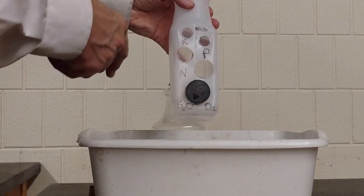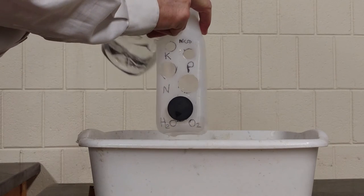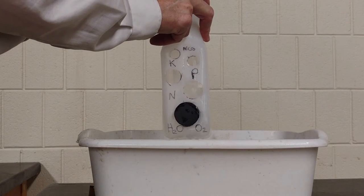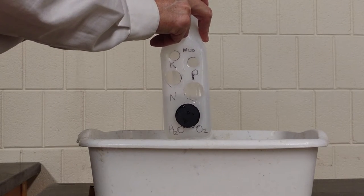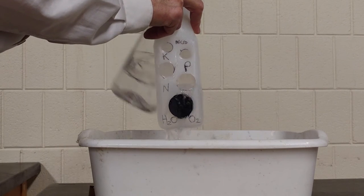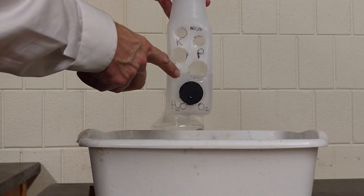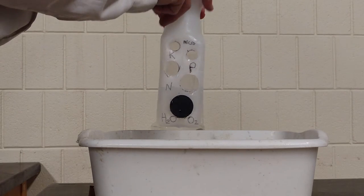Once we meet the need of a plant for oxygen and water, we increase the potential of the plant for growth until we reach the next most limiting factor. And in this case, that next most limiting factor for most plants is nitrogen.